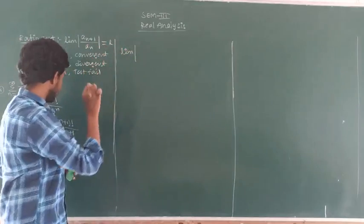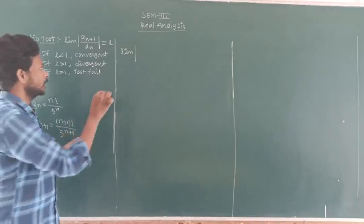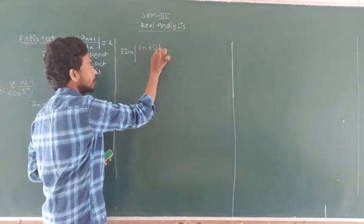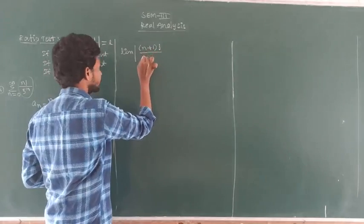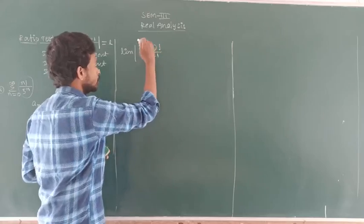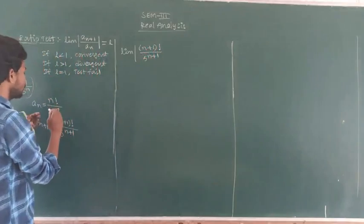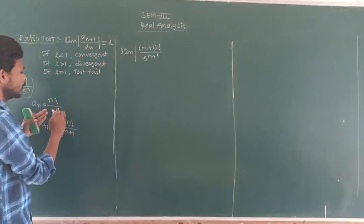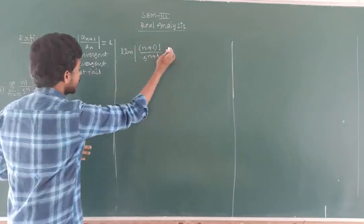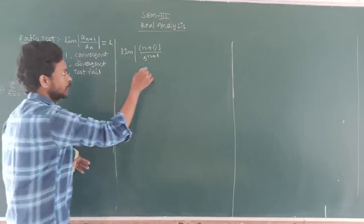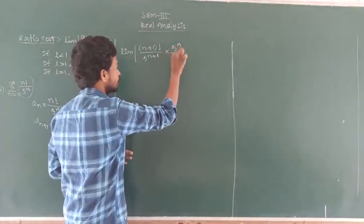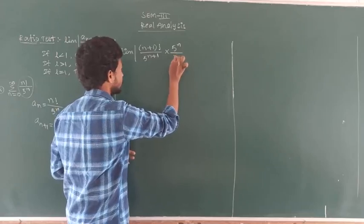Limit: a_{n+1} is n plus 1 factorial by 5 to the power of n plus 1. It is divided by a_n. Since a_n comes to the other side, it will become reciprocal. Then we can write 5 to the power of n by n factorial.